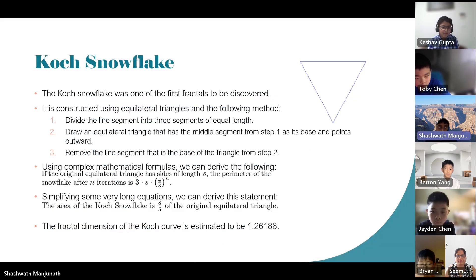Koch snowflake. The Koch snowflake was one of the first fractals to be discovered. It is constructed using equilateral triangles. Divide the line segment into three segments of equal length. Then draw an equilateral triangle that has the middle segment from step one as its base and points outward. Remove the line segment that is the base of the triangle from step two. Using this, you can achieve very complex shapes such as this one.